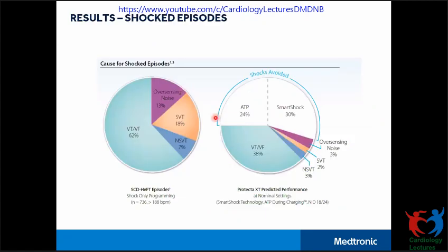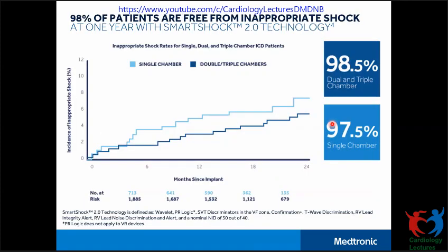Including Confirmation Plus, Smart Shock Technology performance showed it reduced shocks by 24 percent due to ATP and 30 percent due to Smart Shock Technology. In the PainFree SST trial using SST 2.0 parameters at nominal settings, 98.5 percent of patients in dual chamber and triple chamber devices were able to avoid inappropriate shocks, and for single chamber ICD it was 97.5 percent of patients.